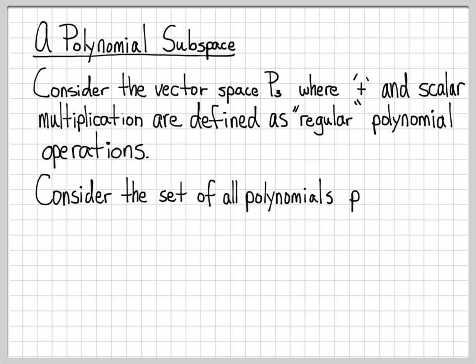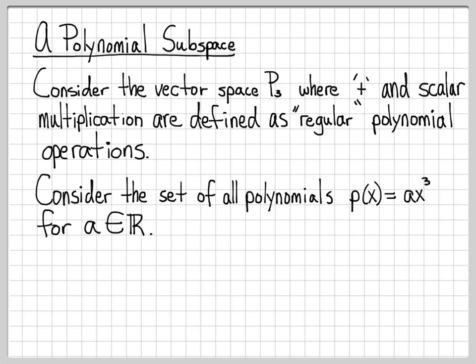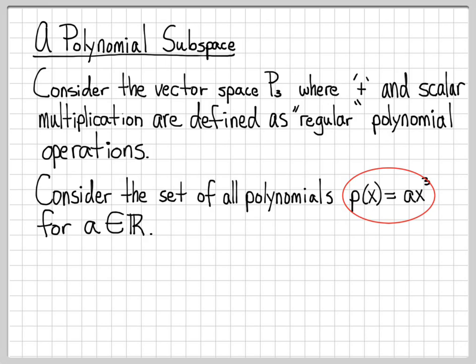What we're going to work with here is the set of all polynomials of the form P(x) = Ax³. This includes just a subset of the polynomials in P3. Remember, P3 includes polynomials of order three — things like 1 + 2x² or 1 + 2x + 9x³ are part of that vector space. What we've done is restrict ourselves to polynomials that can only contain an x³ term times a scalar A from the reals. So this set of all possible Ax³ is much smaller than the full set of elements in P3.